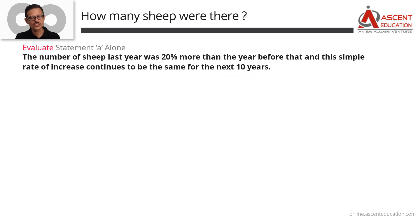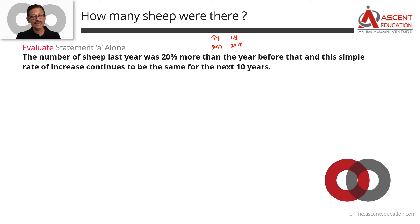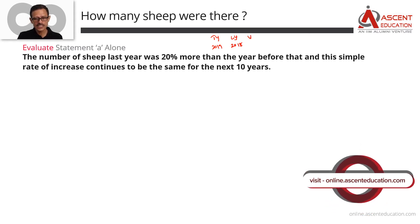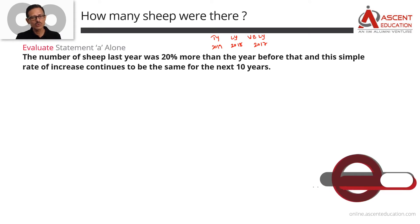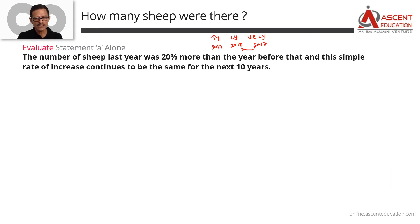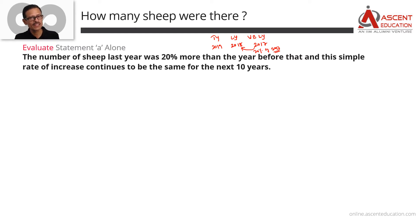Let's quickly run through Statement A. The number of sheep last year was 20% more than the year before that. Taking this year as 2019, last year is 2018 and the year before last is 2017. So the number of sheep she had last year was 20% more than in 2017 — that is the growth. This simple rate of increase continues to be the same for the next 10 years.